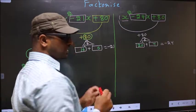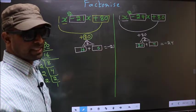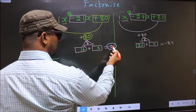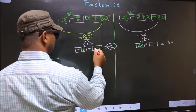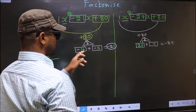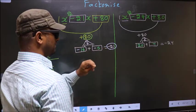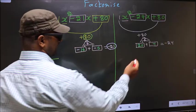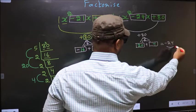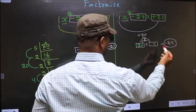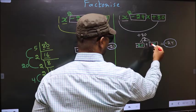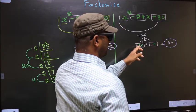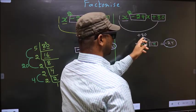Now we should adjust the signs. For the first expression, we have minus 21. To get minus 21, we place minus here and also here: minus 16 minus 5 is minus 21, and minus 16 into minus 5 is plus 80. For the second expression, minus 20 minus 4 is minus 24, and minus 20 into minus 4 is plus 80.